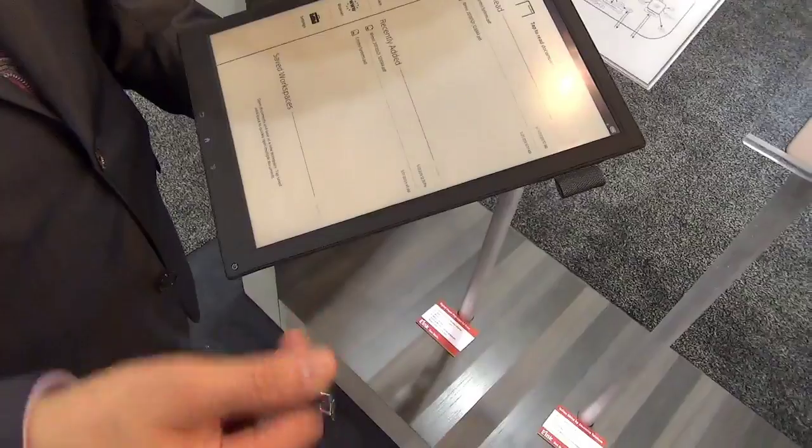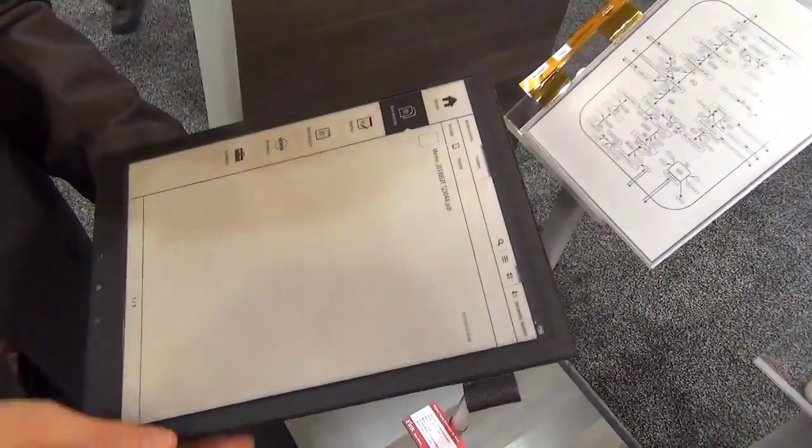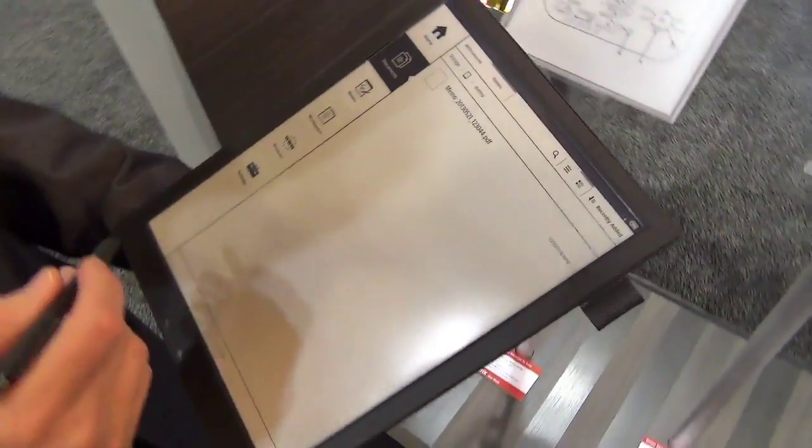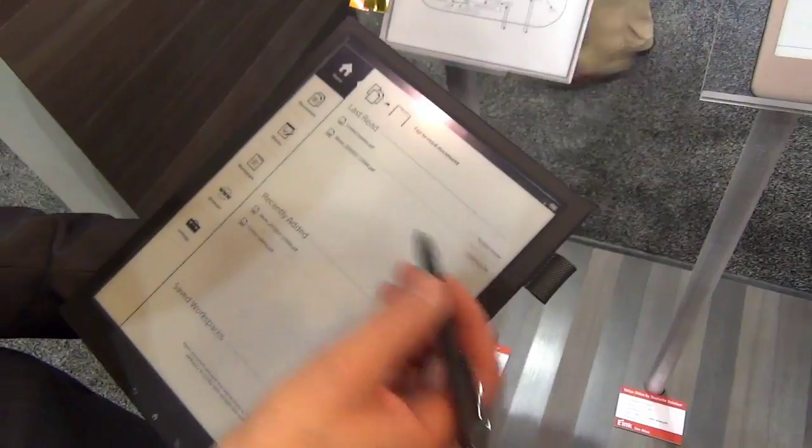So it comes with a digitizer. You can choose your documents, and so here are the documents that you have. Go to the home screen and I could choose what I was reading recently.